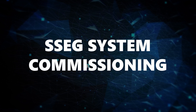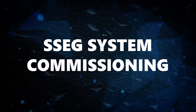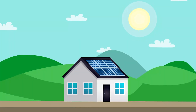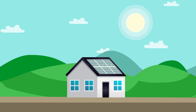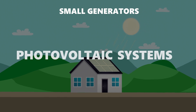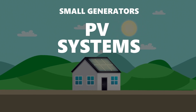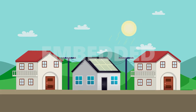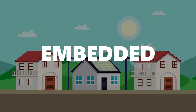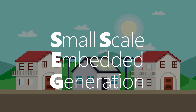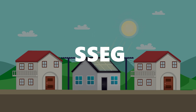This video focuses on the commissioning of solar PV SSEG systems in municipal networks. But first, some background on SSEG. There is a growing trend around South Africa for customers to install small generators such as photovoltaic or PV systems on their properties. These generators are typically connected to the grid behind the meter, making them embedded, and less than one megawatt, making them small. Hence the term Small Scale Embedded Generation, or SSEG.